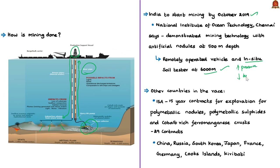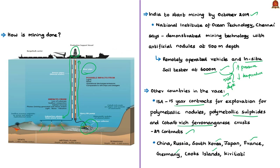The newly developed machine for 6,000 meters will soon be deployed at the 5,500-meter mining site. The International Seabed Authority has entered into 15-year contracts with 29 contractors for exploration of polymetallic nodules, polymetallic sulphides, and cobalt-rich ferromanganese crusts. Countries such as China, Russia, South Korea, Japan, France, Germany, Cook Islands, and Kiribati have all joined this race, having tested technologies in shallow waters.